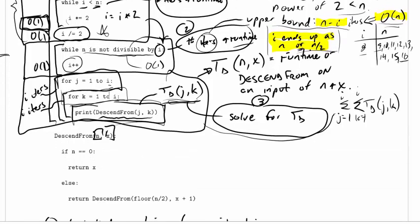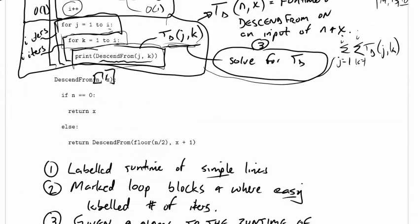Let's go down and look at the recursive function. I've got this function descend from, it takes two parameters, n and x, and I know it's recursive so I'm going to start describing it as a recurrence relation.